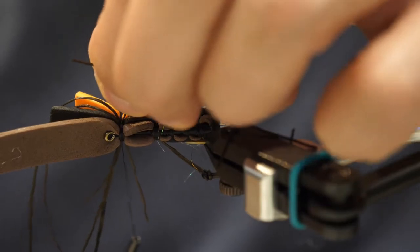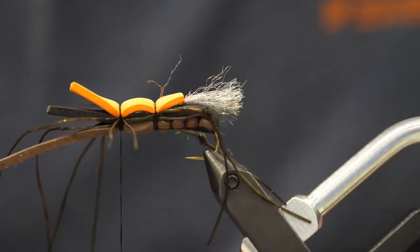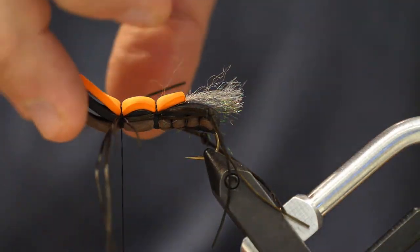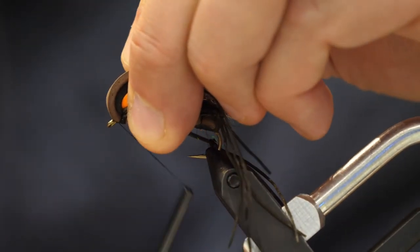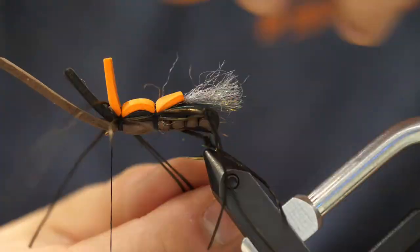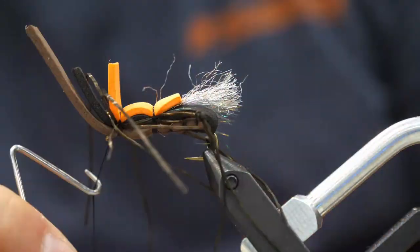Now in this particular pattern, I like to tie all the rubber legs in the same section, but you can certainly tie some of the rubber legs further back on the fly if you want. Now pull the foam out of the way, lock down some thread wraps, and then wet finish this fly to finish it off, and that's going to lock everything in place.